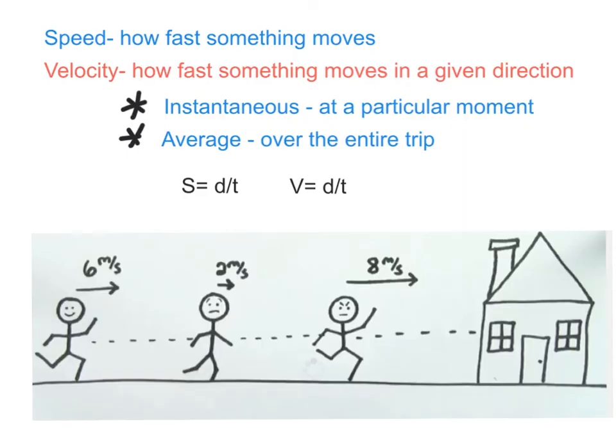So to sum up, speed is how fast something moves. Velocity is how fast something moves in a given direction. And there's two kinds of speed and velocity. There's instantaneous speed or velocity, which is taken at a particular moment in time, usually by a speedometer. Or if you want to calculate instantaneous velocity or speed, you need something called calculus, which is math that you will possibly take in high school, maybe in college.